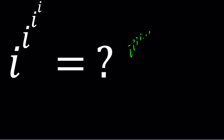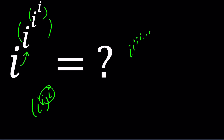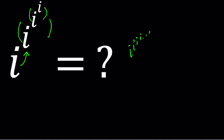When I write something like this, it should be understood as follows: we evaluate from the top down — so i^i is computed first, then that result becomes the exponent for the next i below it, and so on. Otherwise, if you started from the bottom and multiplied left-to-right, you'd get i to the i squared, which is i to the negative one, which is just negative i. So without parentheses, exponentiation like this means you start at the top and work back down.